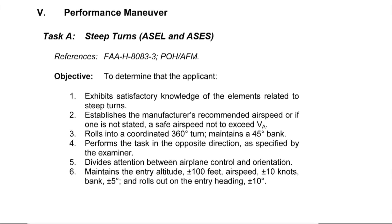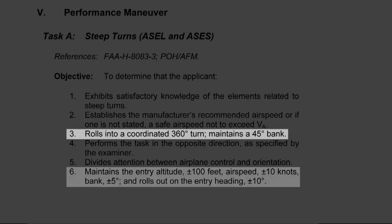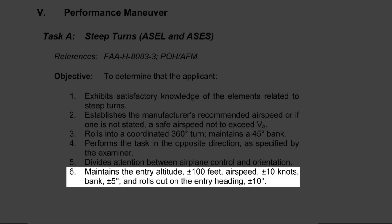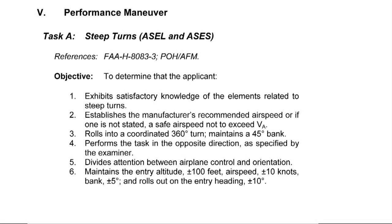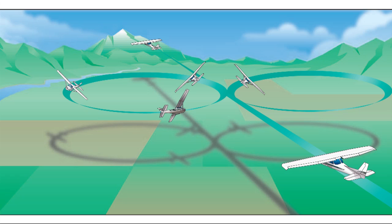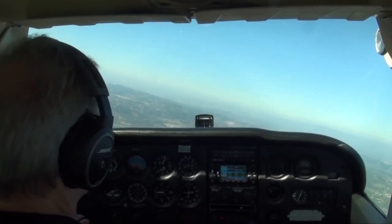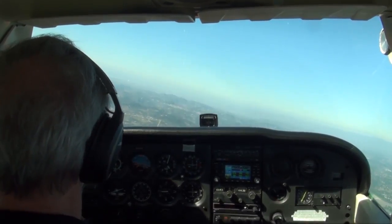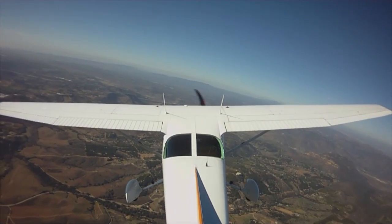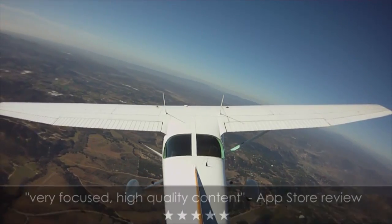The steep turn is a 360 degree turn in either direction with a bank angle of 45 degrees while maintaining a constant altitude and airspeed. The PTS also tells us that the examiner may request a subsequent turn in the opposite direction, so it's a good idea to practice steep turns by doing two 360 degree turns in opposite directions. First, we will perform a clearing turn of 360 degrees at a medium bank so we can effectively scan for other traffic in the area and also select a safe altitude of at least 1,500 feet above terrain with suitable emergency landing areas below.